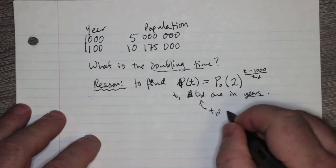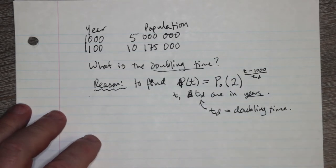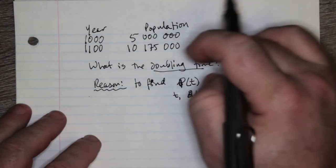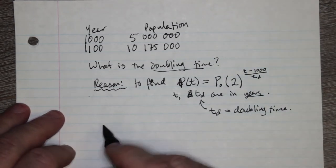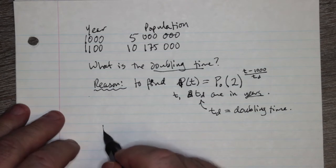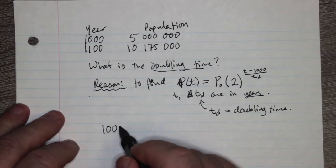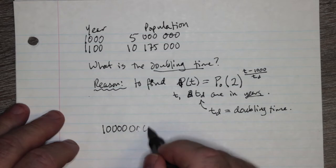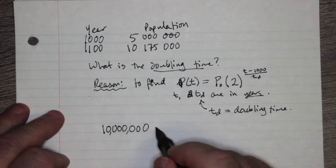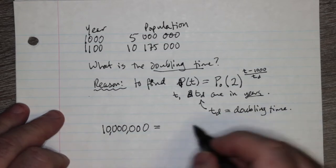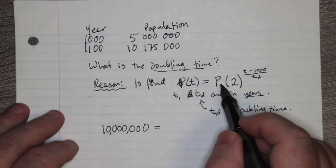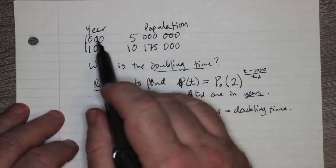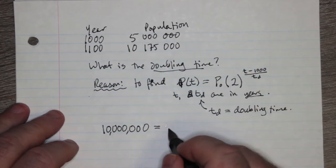td is the doubling time. This is the time it takes for the population to double. Now we don't mean almost double, we mean actually doubling. So if we're starting with 5 million then doubling it will mean that 10 million will be our population at the time period.